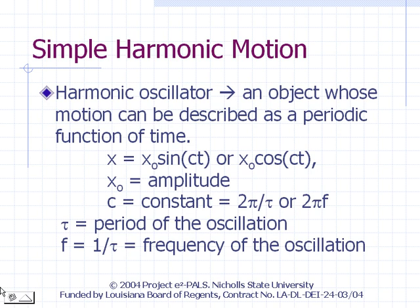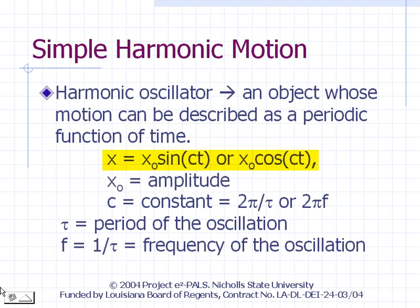A harmonic oscillator is an object whose motion can be described as a periodic function of time. The location of the particle, x, as a function of time, t, is of the form x equals x0, the amplitude of the motion, times the sine or cosine of a constant, c, times time, t.